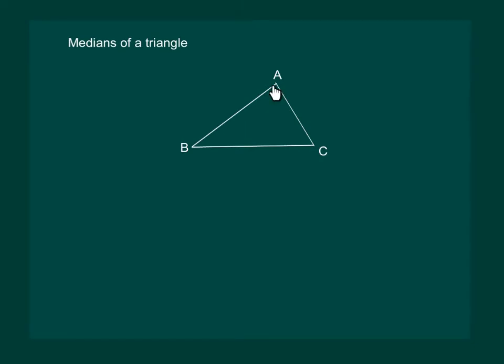The side opposite to vertex A is BC. Take the midpoint of side BC. The midpoint can be plotted either by using a scale or by constructing a perpendicular bisector of the side BC. Mark the midpoint as D and join AD.